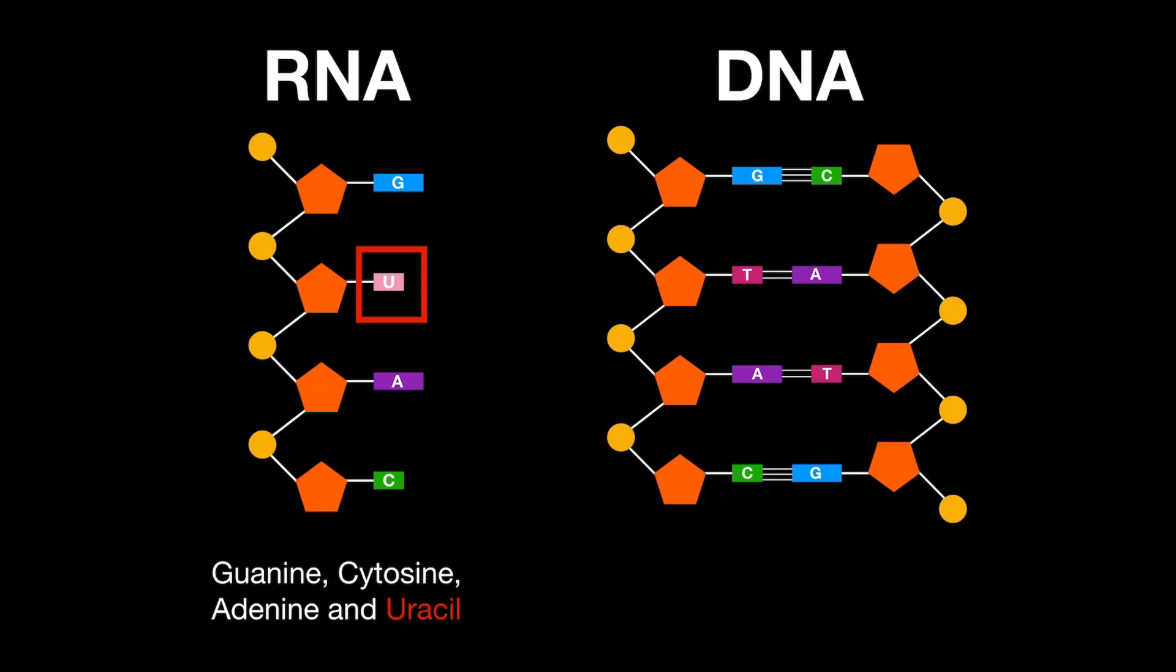In contrast, in DNA, you find guanine, cytosine, adenine, but instead of uracil, you find thymine. So there is no uracil in DNA.